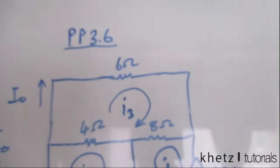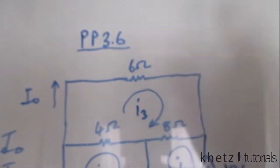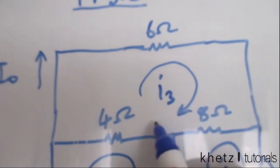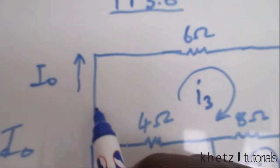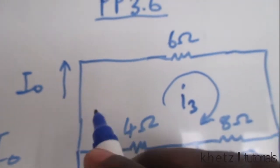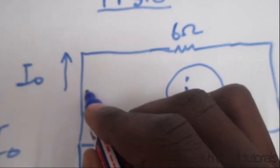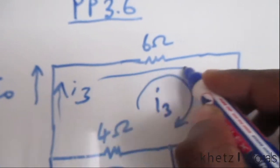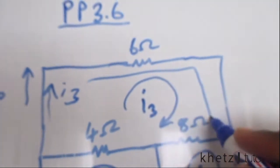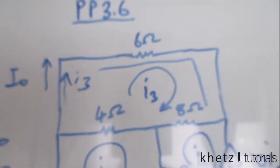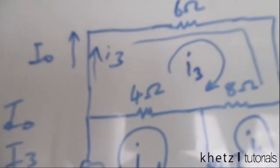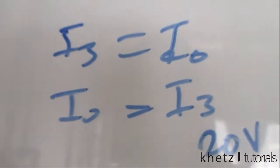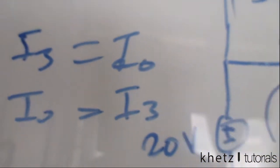Just to go through that again: I.3 goes all the way and it goes in the same direction as I.O at this point. So I.3 is going to go like that, all the way around. So I.3 is equal to I.O, and I.O is equal to I.3.